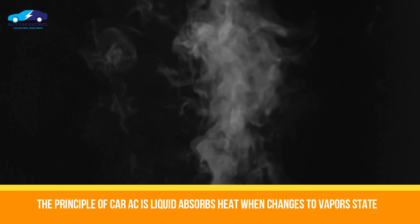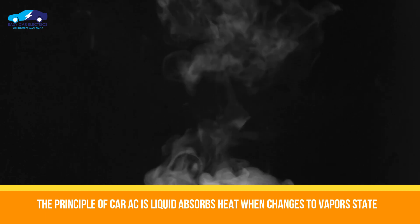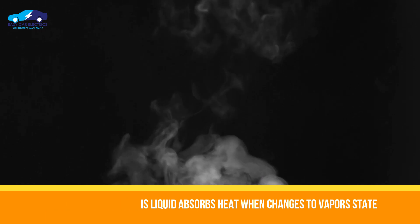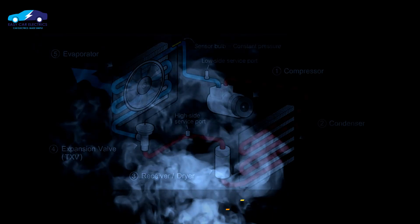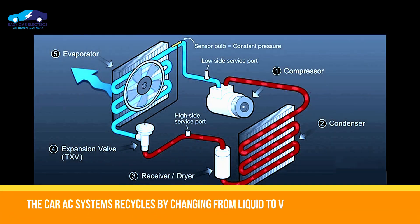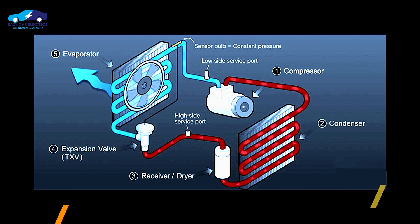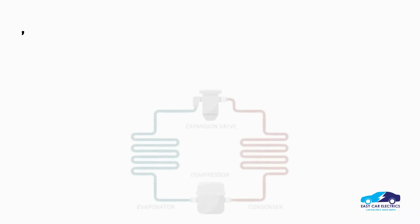The car AC system works on the principle that liquid absorbs heat when it becomes vapor. The car AC system recycles the refrigerant by converting it from liquid to vapor and vapor to liquid again, and you receive cold air in the cabin of the car.